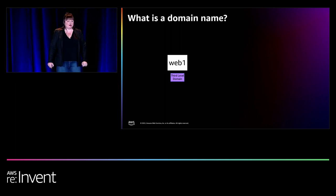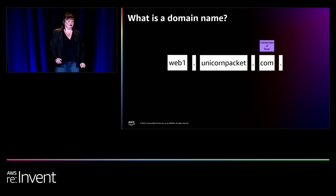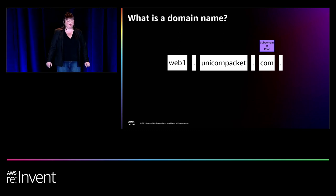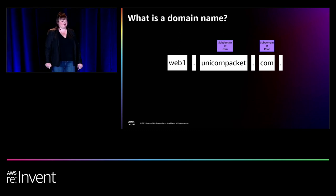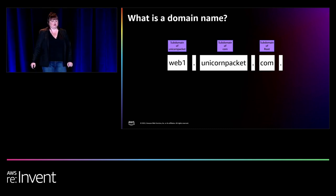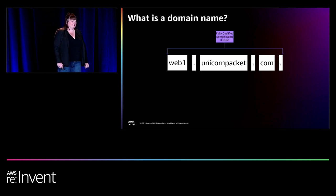So to reiterate — DNS is hierarchical. Com is the subdomain of root. Unicornpacket is the subdomain of com. And web1 is the subdomain of Unicornpacket. Combined, they are a fully qualified domain name, also known as an FQDN.